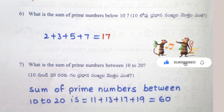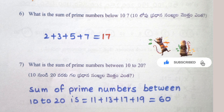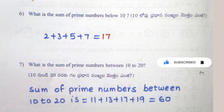What is the sum of prime numbers between 10 and 20? Sum of prime numbers between 10 and 20: 11 + 13 + 17 + 19 = 60.